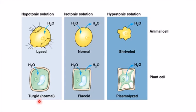The second type is the isotonic solution. Here, the medium outside and inside the cell have the same proportion, so whenever water comes in, some amount goes out. In an isotonic solution, both are balanced — the outer medium is balanced and the inner medium is balanced. Water comes in and water goes out. In plants also, water comes in and water goes out. Such a solution is called an isotonic solution.